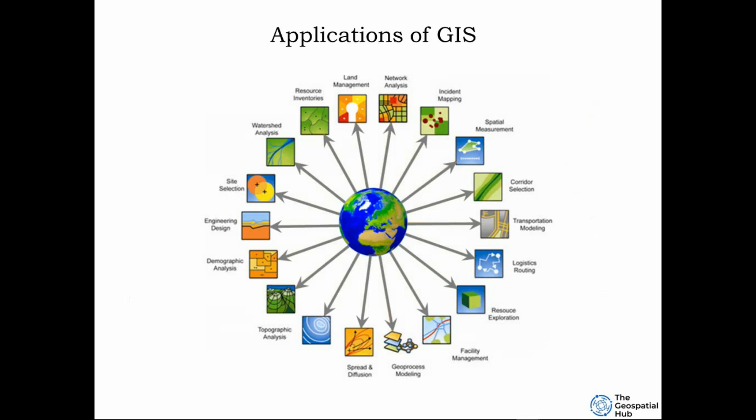GIS operates on a number of levels. At its most basic level, Geographic Information System technology is utilized for computer-aided cartography or simply put, map creation. But the true strength of GIS comes from its ability to evaluate attribute and geographic data using spatial and statistical approaches.